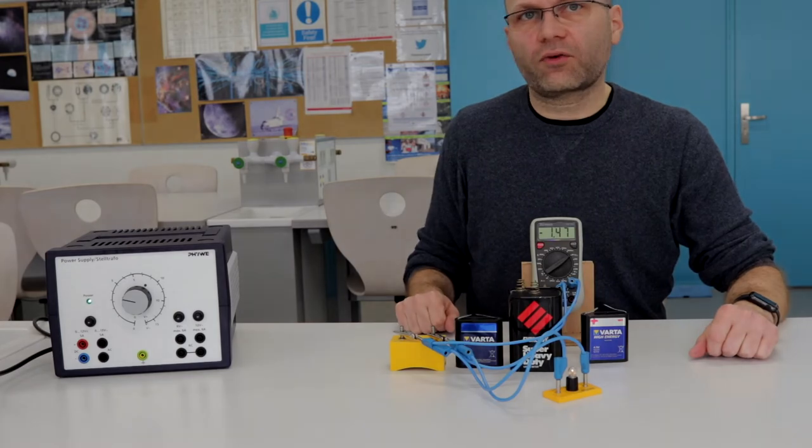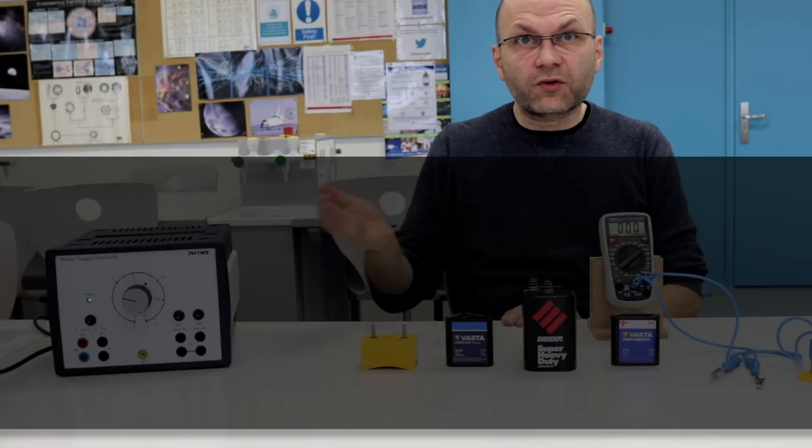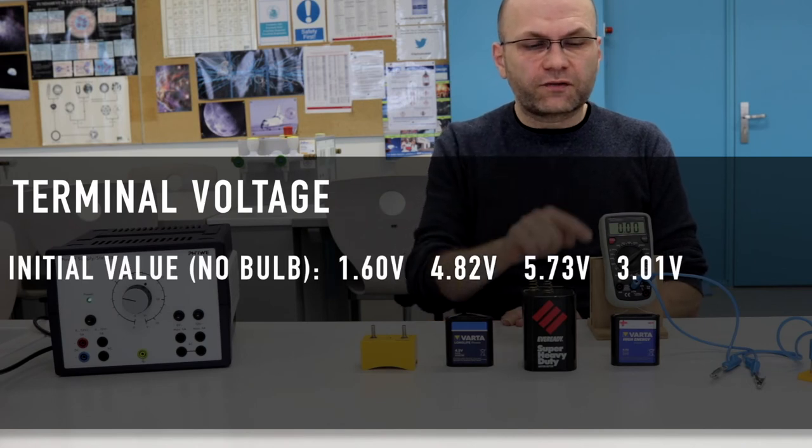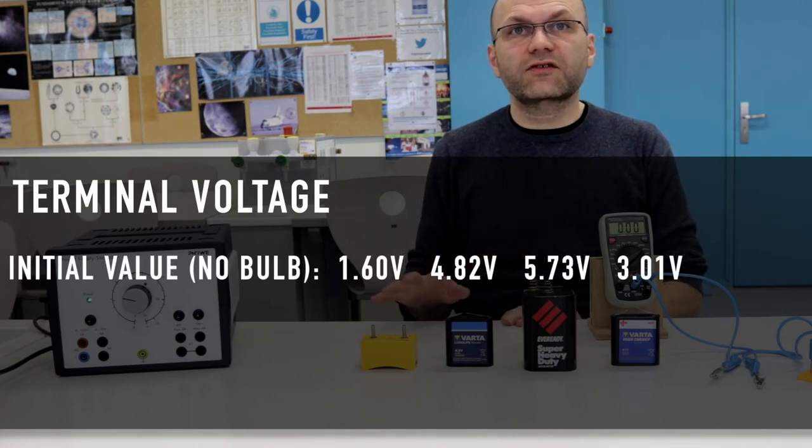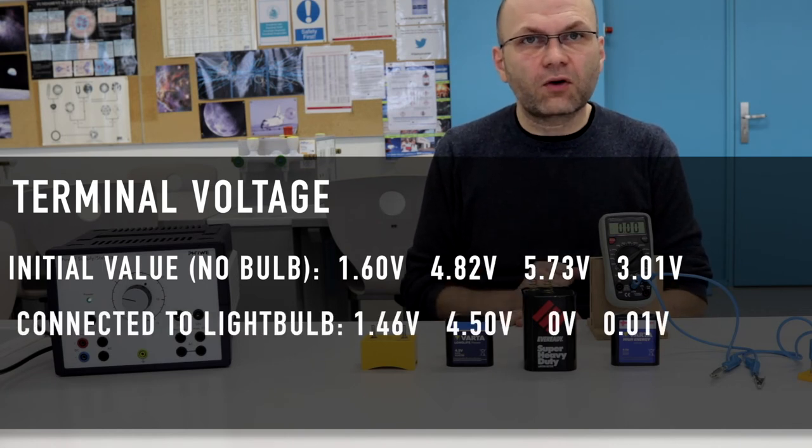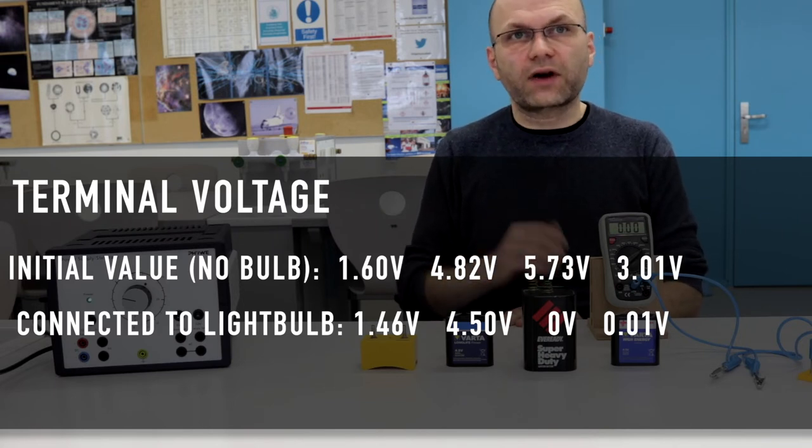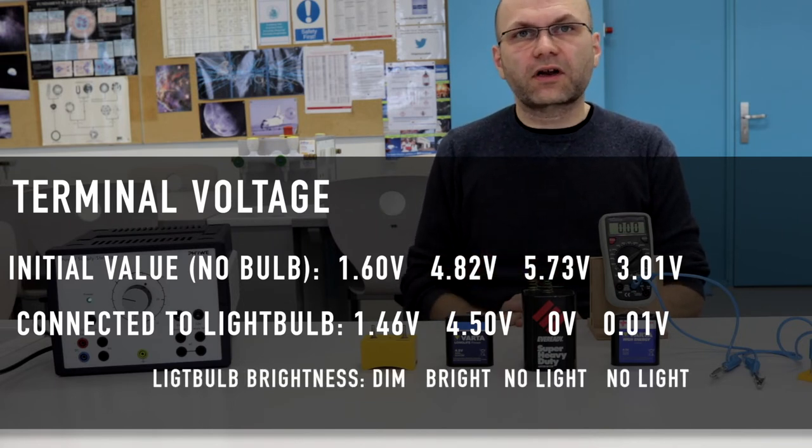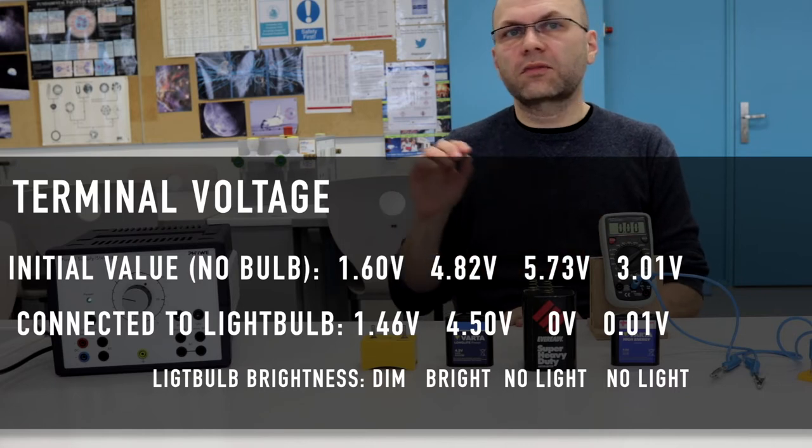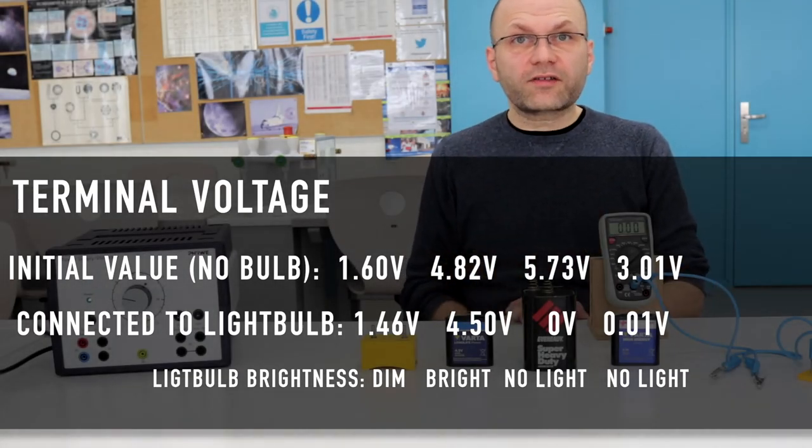So what is the explanation for all this? In this case, here is a summary of the values of terminal voltage across the cells when the light bulb was not connected. And then you see now the values of the voltage when the light bulb is connected, together with the state of the light bulb: no light, dim, bright. So the results are a little puzzling.